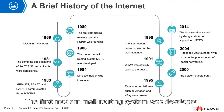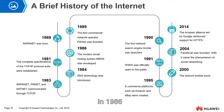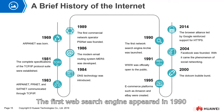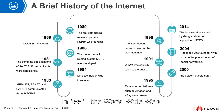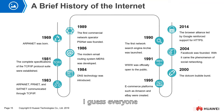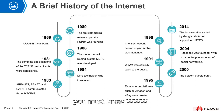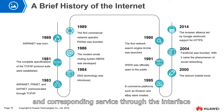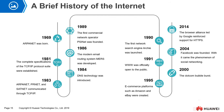The first modern mail routing system was developed in 1986. The first commercial network operator was established in 1989, and the first web search engine appeared in 1990. In 1991, the World Wide Web, also known as WWW, was officially opened to the public. Today, we purchase cloud computing and corresponding services through the interface of webpages.